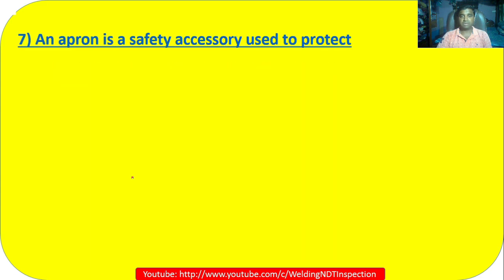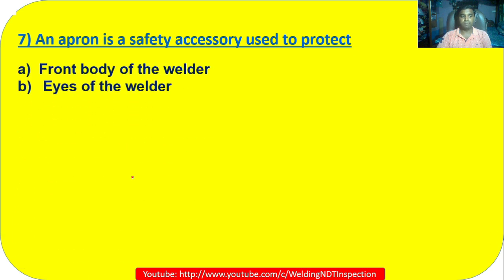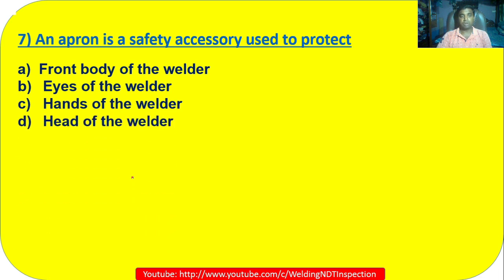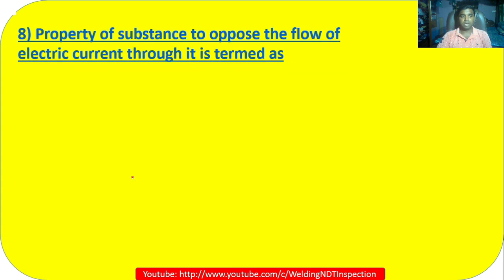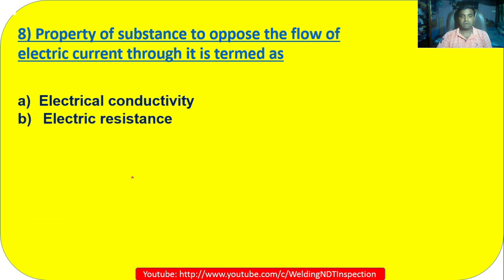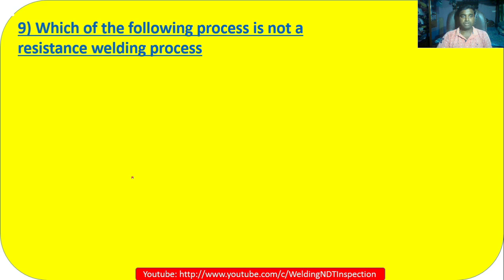Question 7: An apron is a safety accessory used to protect: A) the front body of the welder; B) eyes; C) hands; D) head. An apron protects the front body of the welder — Option A is correct. Question 8: The property of a substance to oppose the flow of electric current through it is called: A) electrical conductivity; B) electric resistance; C) density; D) electric pressure. The opposition to electric current is resistance — Option B is correct.